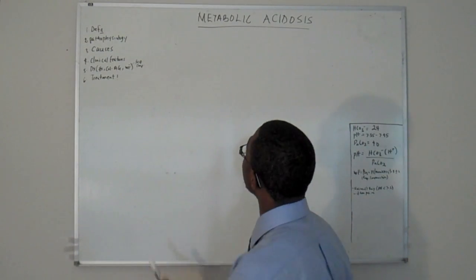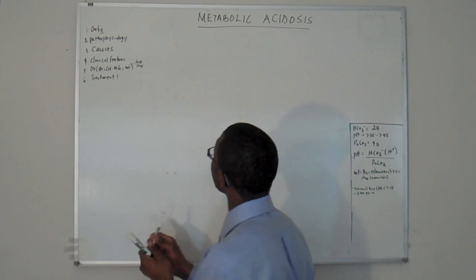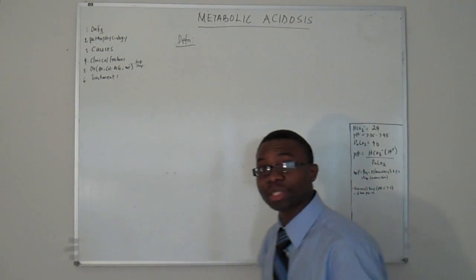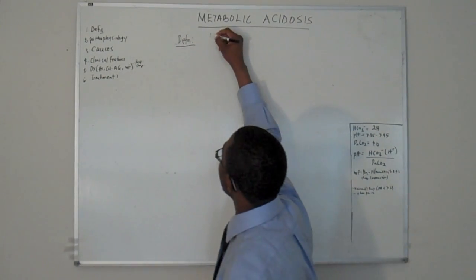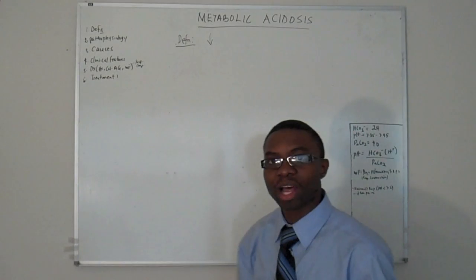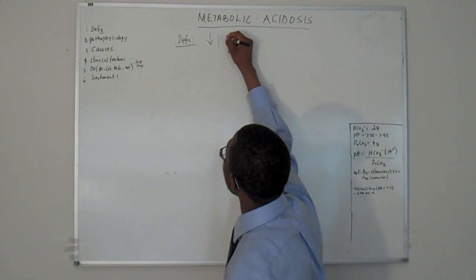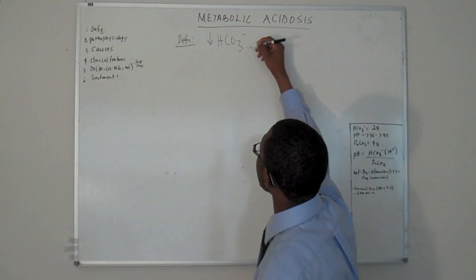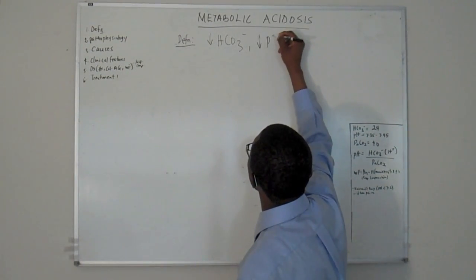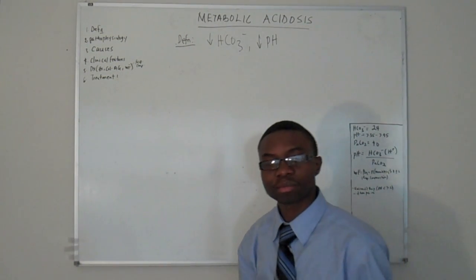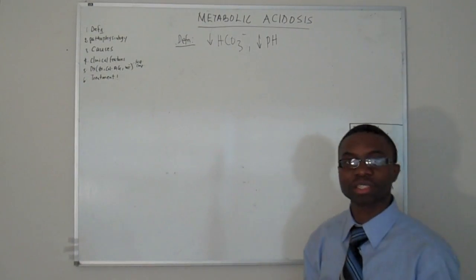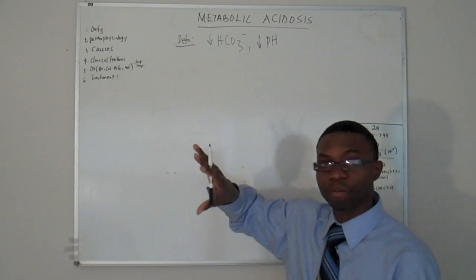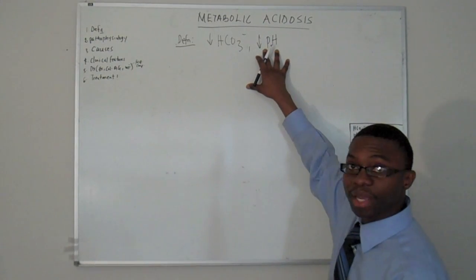Okay? So, definition. What's the definition of metabolic acidosis? The definition basically is any change physiologically in your body that causes your bicarb to be decreased, causing a decrease in your pH in your blood. That's just a simple definition. So anything that makes your bicarbonate in your blood, which is supposed to be a buffer, and makes your blood pH to decrease.